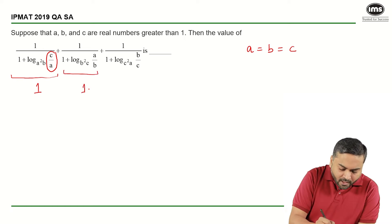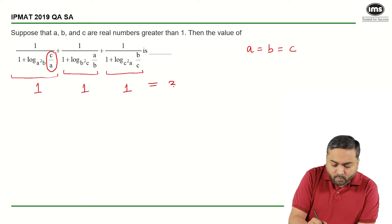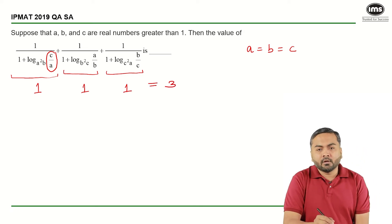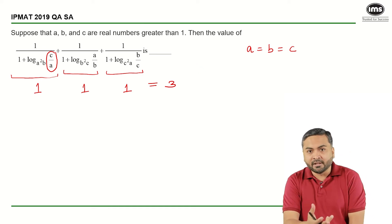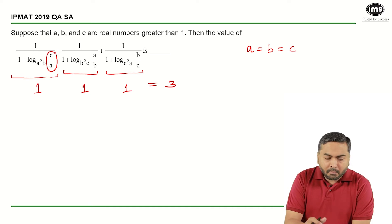Similarly, this particular term will turn out to be 1 and this particular term will also turn out to be 1, and hence the answer would be 3. So I can get this question probably within 30 seconds.